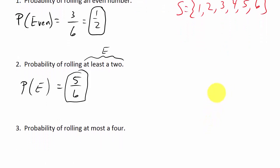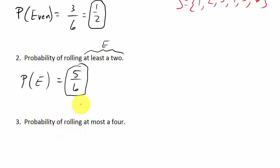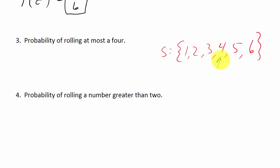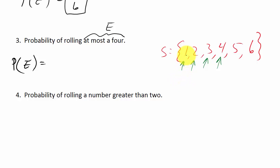Now the probability of rolling at most a 4. Let's rewrite the sample space: 1, 2, 3, 4, 5, 6. At most a 4 means the highest number can be 4, so we want everything from 4 down — that's 4, 3, 2, or 1. So the probability of event E is 4 over 6, which gives us 2 thirds.